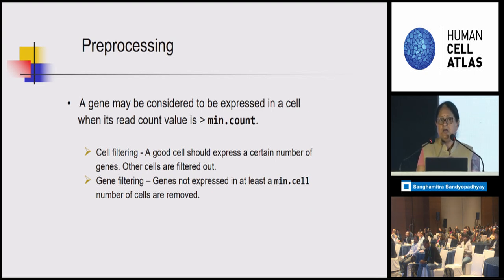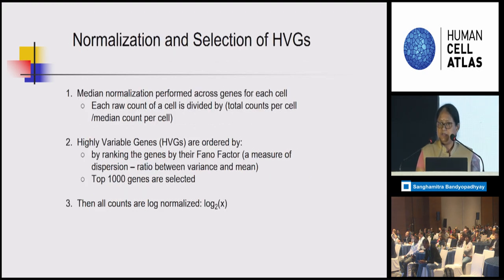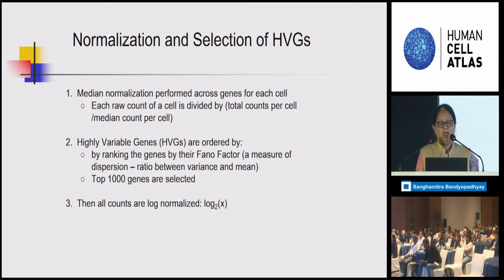In preprocessing, we remove cells in which very few genes are expressed, and remove genes expressed in very few cells. Then we perform median-based normalization, and using a measure called the Fano factor — essentially the ratio between variance and mean — we select the top 1,000 genes and log-normalize the data.